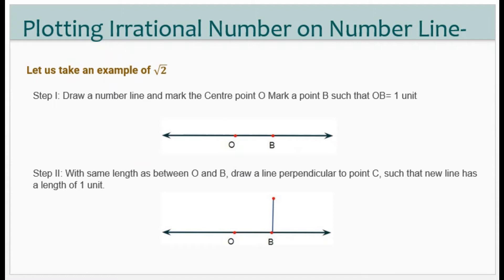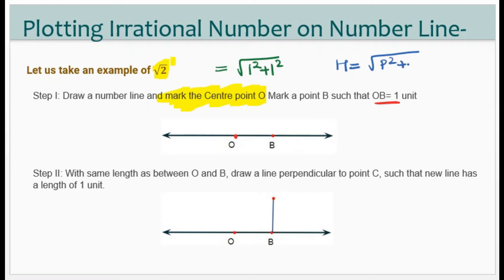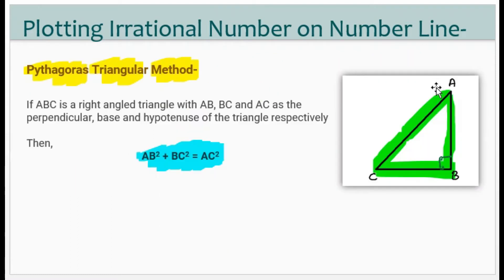We will understand this by taking one example. Suppose we have to plot root 2. First, draw a line and mark center point O. Mark point B such that OB equals 1 unit. Why are we taking OB as 1 unit? Because root 2 equals the square root of 1 squared plus 1 squared. Applying Pythagoras theorem: hypotenuse equals under root of P squared plus B squared. If perpendicular is 1 unit and base is 1 unit, then hypotenuse equals root 2, since 1 squared plus 1 squared equals 2, so the hypotenuse is root 2.